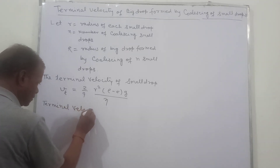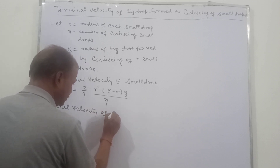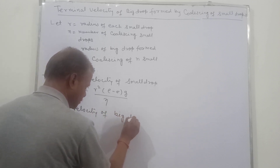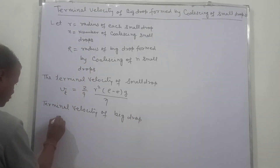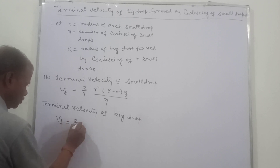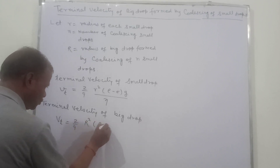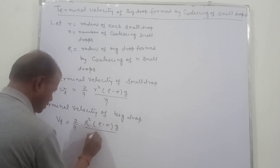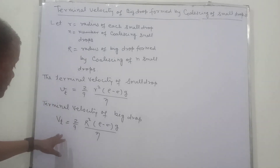Terminal velocity of the big drop: VT is equal to (2/9) R² (ρ − σ) g / η. So these are the two terminal velocities.